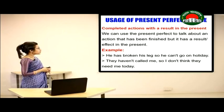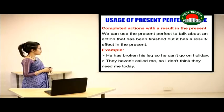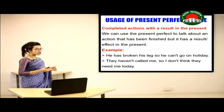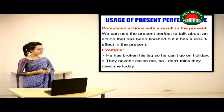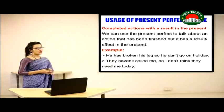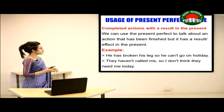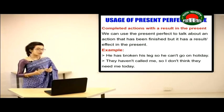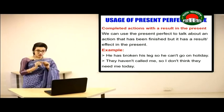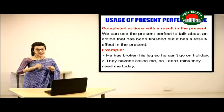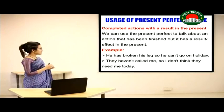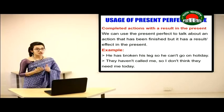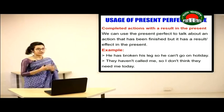We use Present Perfect for completed actions with a result in the present — an action that has been finished but has a result or effect now. For example: 'He has broken his leg, so he cannot go on holiday' and 'They haven't called me, so I don't think they need me today.' In the first case, the injury's result is still present, preventing him from going on holiday.